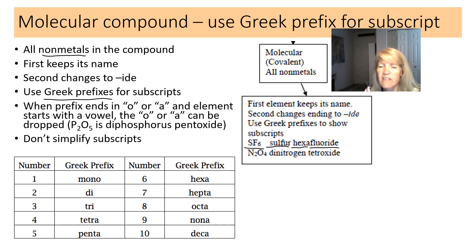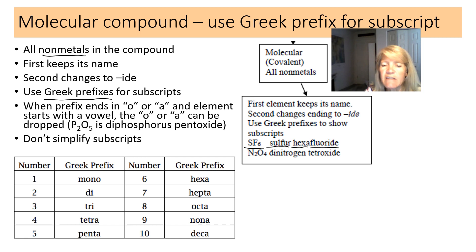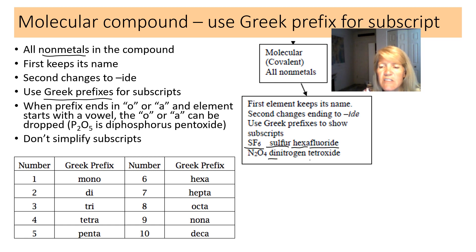Name the first element, then use prefixes for the count. For N2O4: the first element is nitrogen, and since there are two, we call it dinitrogen. The last element changes to -ide, and with a subscript of four, it's tetraoxide.